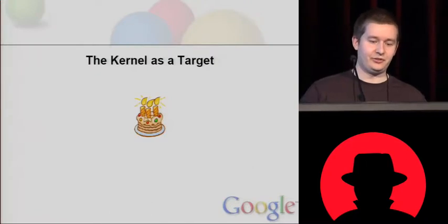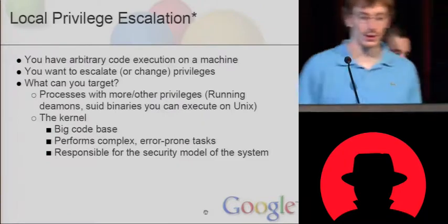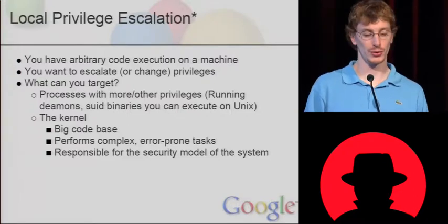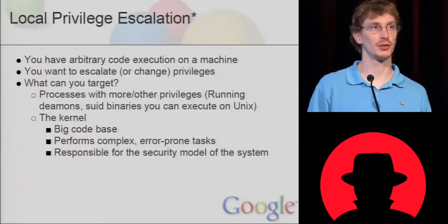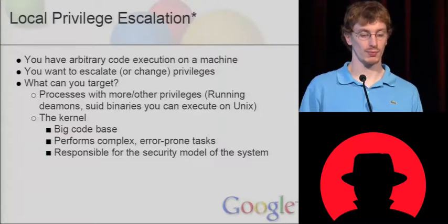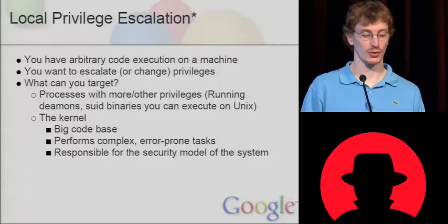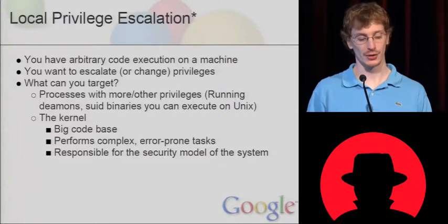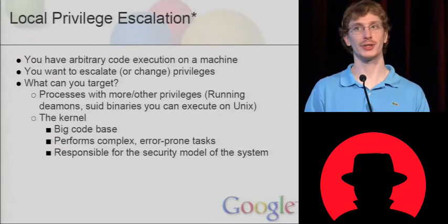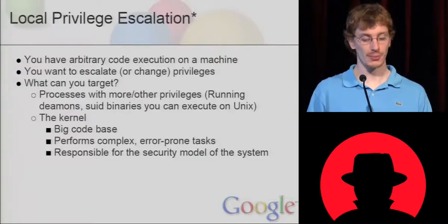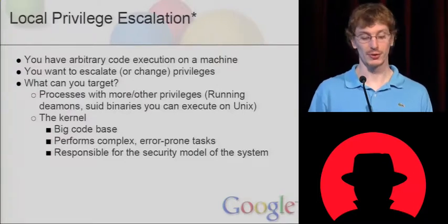The first section of our talk is called 'The Kernel as a Target.' Imagine you have arbitrary code execution on a machine and you want to escalate or switch your privileges — it's not necessarily an escalation, you might just want the privileges of another user. You can target processes with more or different privileges — running daemons, setuid binaries you can execute on Unix — and you can also target the kernel. The kernel has a lot of nice properties for an attacker: it has a huge code base, performs complex and error-prone tasks, and is responsible for the whole security model of the system.